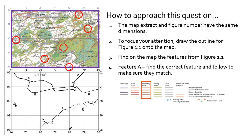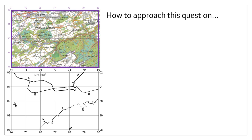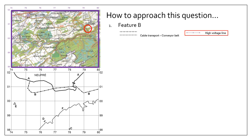Feature A is secondary roads. For feature B, there are one or two possibilities. I'm going with this one because the circles are colored in — the other line would be cable transport, but those circles aren't colored in. For feature C, I need to find the blue circle. The smaller blue circle aligns with the drinking water installation: the square building and the circle of the water tower. That's why I'm selecting water tower.